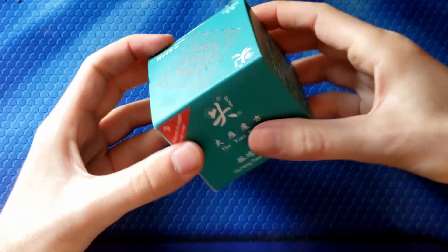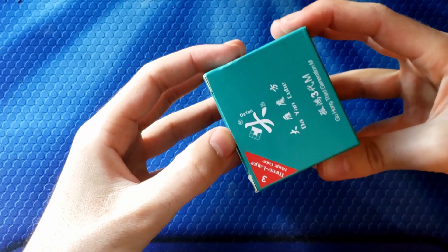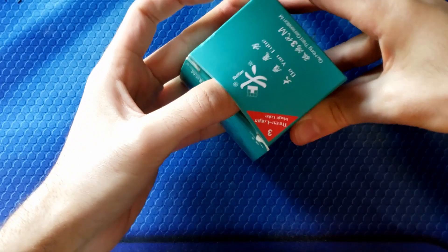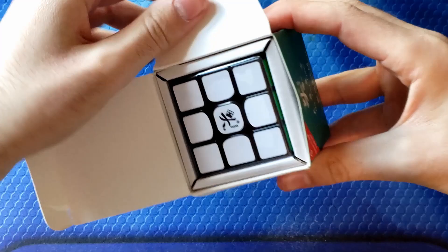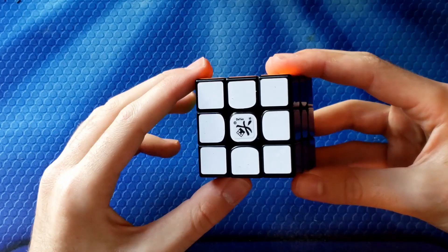So I think a logical order to go in is to start with the Guhong. So let's take a look. The Guhong, as I mentioned before, first to have torpedoes. Very revolutionary puzzle. This is a very important line of speedcubes in speedcubing history. So I'm interested to see what they did with it.